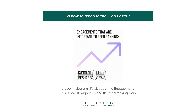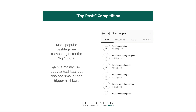So it's all about the engagement. There are plenty of hashtags we can use to appear in top posts. Mainly we use the most popular hashtags — we call them the big hashtags. For example, the online shopping hashtag has around 43 million posts. That's why we should mix our hashtags and use smaller and bigger ones.